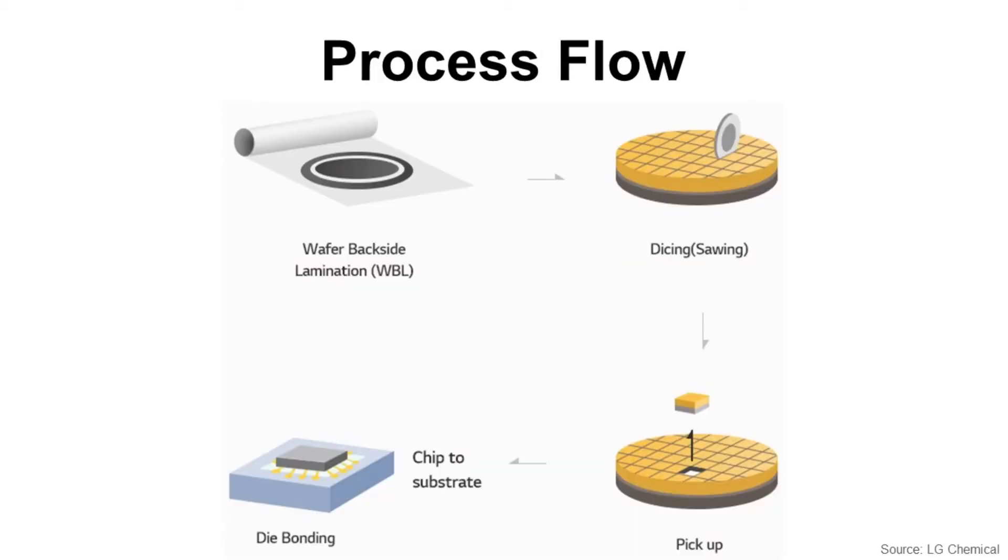Process flow is the die-attach film wafer backside lamination first, dicing, pickup, die bonding, then cure process is followed.